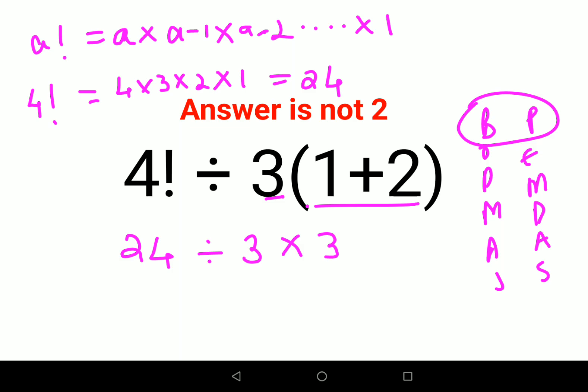Please understand, here we have division and multiplication. Whenever you have division and multiplication in the question, they hold equal weightage. So you will go from left to right. Here in this case, we will do 24 divided by 3, which is 8, into 3.